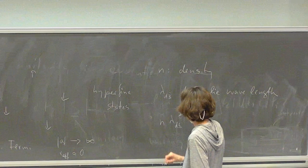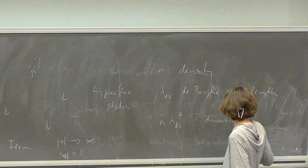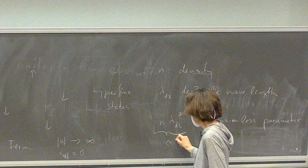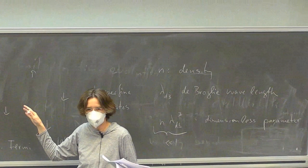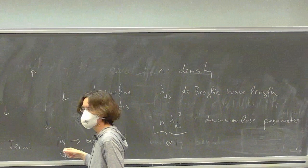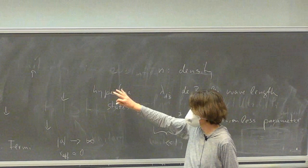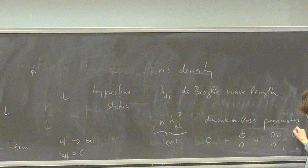The dimensionless parameter is n times the de Broglie wavelength cubed. In the limit where this is fairly small — above the transition temperature but not so high that other partial wave channels matter, so we stay in the S-wave channel — we can work out the equation of state by solving the one-body, two-body, three-body, and four-body problems.